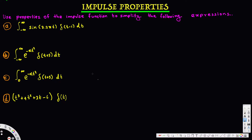From that we get t equals one, which is the location of the impulse. We replace t with one, giving us sine(3.25 × 1) — the impulse terms drop away and that simplified value is the final result. We also need to make sure the impulse location falls within the range of integration. Here the range is negative infinity to infinity, and t=1 is within that range, so the simplification is valid.